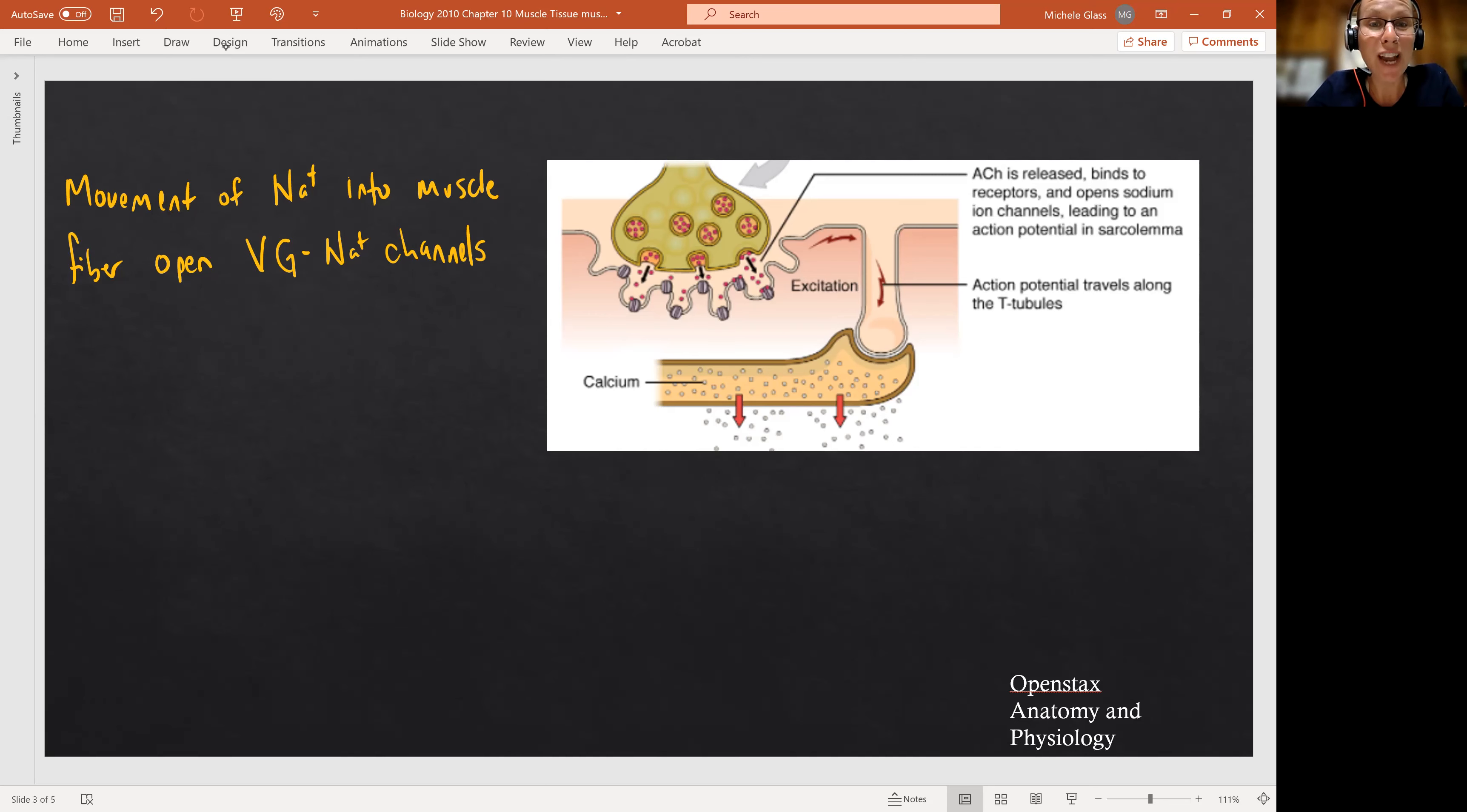So remember, we said that the acetylcholine was the key to unlock the chemically gated sodium channel. Okay, so the change of charge, change of voltage is the key to unlock or open the voltage-gated sodium channels. So you started out, I'm going to go ahead and write up here, initial movement of sodium into the muscle fiber is opening the voltage-gated sodium channel.